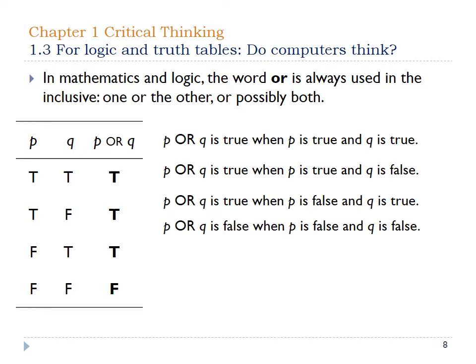If you look at this truth table compared to the one for conjunction, you notice a distinct difference. The first line is true again because they're both true. However, in the next two cases, when one of them is false, the final statement is still true, because either one would possibly work. The only time it wouldn't work is when they're both false — that means everything is wrong.